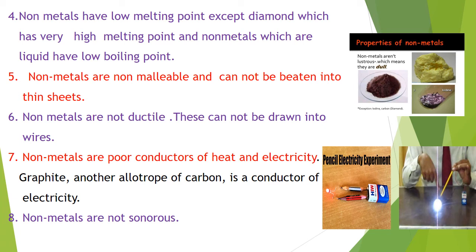Non-metals are non-sonorous. The example indicates that the graphite rod inside a pencil is a conductor of electricity — when it is added to the circuit, the bulb glows, indicating that graphite is a conductor of electricity.